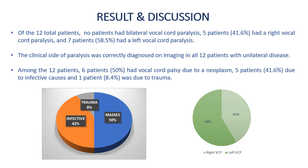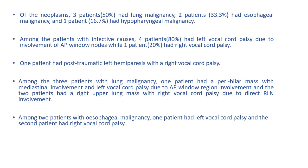Among the 12 patients, 6 had palsy due to a neoplasm, 5 due to infective causes, and 1 due to trauma. Of the neoplasms, 3 patients had lung malignancy, 2 had esophageal malignancy, and 1 had hypopharyngeal malignancy. Among infective causes, 4 had left-sided palsy due to involvement of the aortopulmonary window nodes, while 1 patient had right vocal cord palsy. One patient also had post-traumatic left hemiparesis with resultant right vocal cord palsy. Among the 3 patients with lung malignancy, 1 had a perihilar mass with mediastinal involvement and left vocal cord palsy, and 2 had a right upper lung mass with right vocal cord palsy. Among the 2 patients with esophageal malignancy, 1 had left palsy and the other had right palsy.